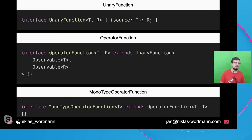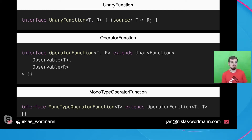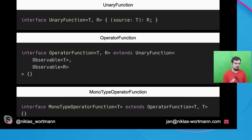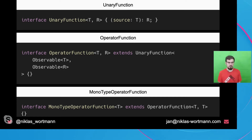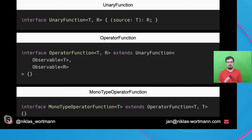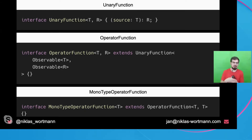If we take a look at the RxJS code, we stumble across three types. We have the unary function, which takes a source value and returns some other value — pretty much how Wikipedia described an operator. Then there's the operator function, which is just a unary function operating on observables — taking a source observable and returning another observable. On top of that, RxJS also has the monotype operator.